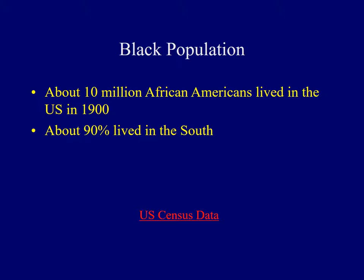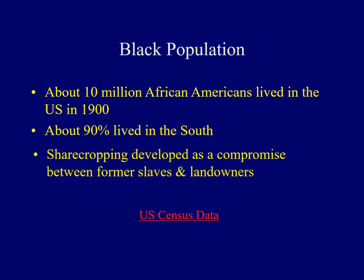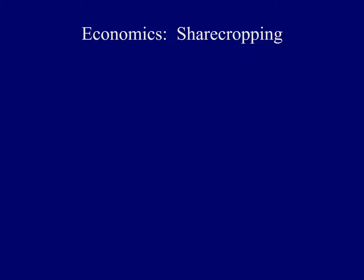Sharecropping developed as a compromise of sorts between former slaves and landowners in the years after the Civil War. There were a variety of characteristics associated with sharecropping in the American South. Typically, landowners would subdivide their plantations into 50-acre plots. An individual family would be responsible for raising crops, usually cotton, on those 50-acre segments. Because sharecroppers had very little money, they usually would give 50% or half of their crop as rent in return for the use of the land.